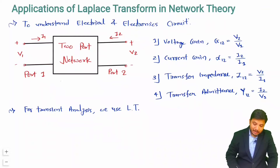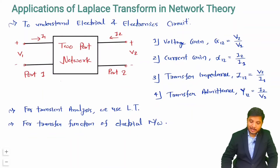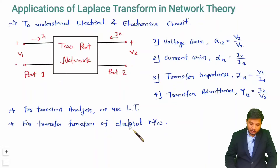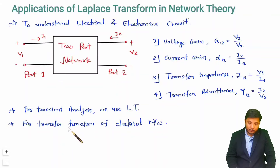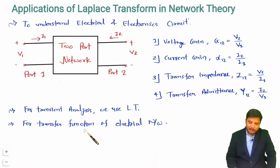Another application in network theory is finding the transfer function of an electrical network. Transfer function is also referred to as voltage gain. When you want the transfer function, you use Laplace transform. This gives you the location of poles and zeros, based on which you can identify the stability of the electrical system. I will be explaining how to derive the transfer function using electrical networks, with examples in my network theory playlist.